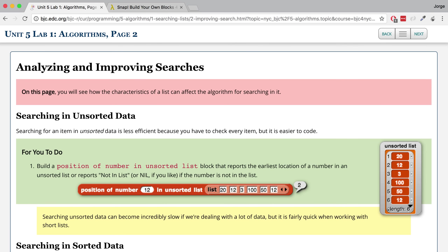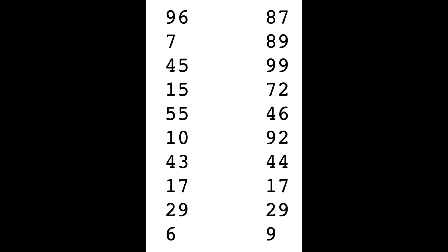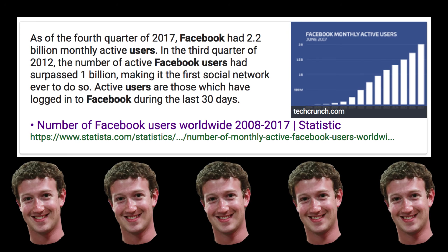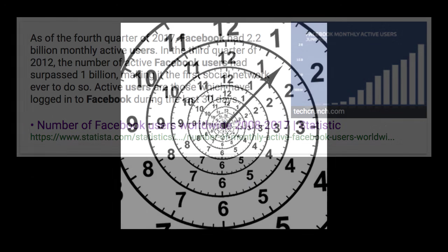This isn't really detrimental when we're looking at a small list with like 20 items, because a computer can go through 20 items really fast. But imagine you're working at Facebook and you have to create a person search algorithm, and Facebook has over 2 billion people on the platform. Just by chance, the person you're looking for might be the last person in the list, so you'd have to go through over 2 billion people before you find your match, and that might take a long time.